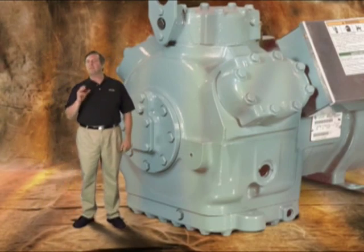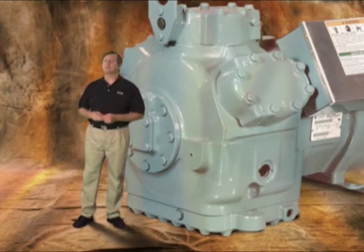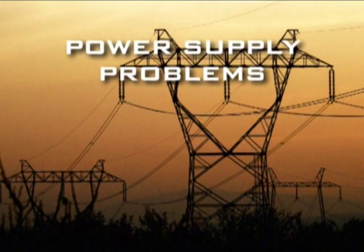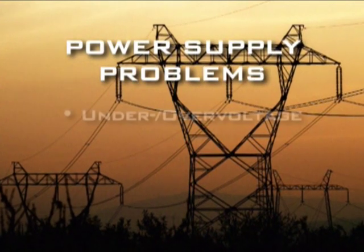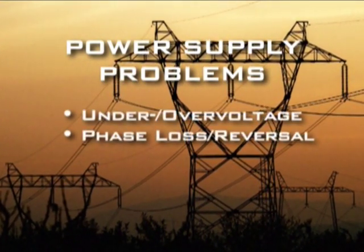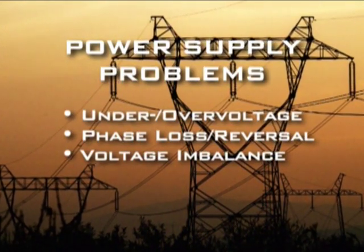The compressor is the most critical part of your air conditioner or refrigeration system. Unfortunately, it's also the most vulnerable. That's because even relatively minor problems with a three-phase power supply can lead to premature compressor failure. Power supply problems are surprisingly common. Typical problems include under and over voltage conditions, phase loss or phase reversal, and voltage imbalance. Let's take a closer look at each problem.